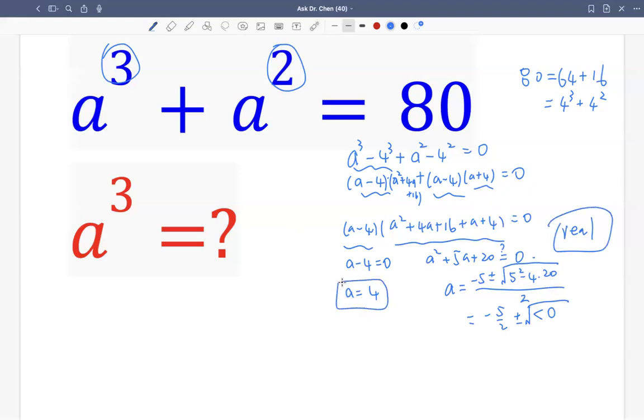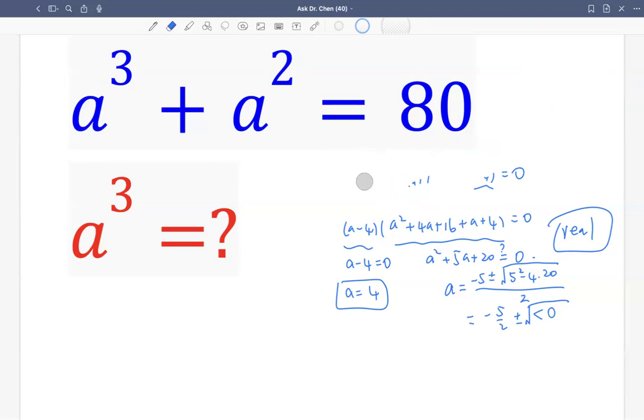So we have one solution: a = 4. Of course, a³ = 64. So this is the normal way. But today, I actually want to show another way: to use a pattern of mathematics. Because studying mathematics is basically studying the pattern and using the pattern to predict something. So let's use that to predict.